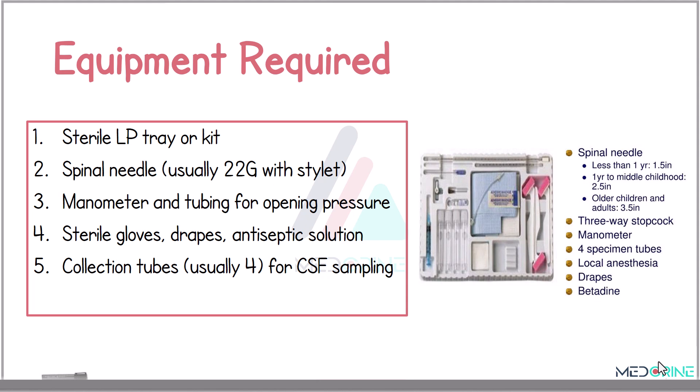The equipment required includes a sterile lumbar puncture tray containing a spinal needle, usually 22 gauge with a stylet, a manometer and tubing to measure opening pressure, sterile gloves, antiseptic solution, and collection tubes typically numbered 1 to 4 for sample collection.